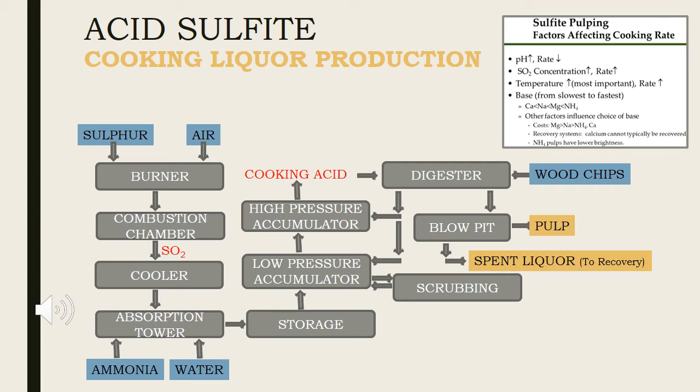There are different factors that affect cooking rate of sulfite pulping process. These factors include pH, sulfur dioxide concentration, temperature, base reactivity and other factors that influence choice of base. With increase in pH, rate of reaction decreases. With an increase in sulfur dioxide concentration, rate of reaction increases. With an increase in temperature, which is most important factor, rate of reaction increases.